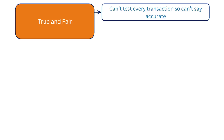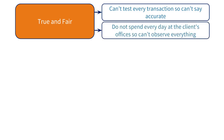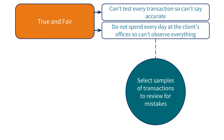To define the term 'true and fair,' we must first understand that the auditor cannot say the financial statements are accurate. The reason for this is that the external auditor does not review every single transaction in the financial statements, nor do they spend every day at the client's offices observing every single process. The time the auditor has means they take a snapshot of the client's transactions, systems, and controls. We say that the auditor reviews the financial statements on a sample basis, selecting samples of transactions to review rather than testing them all.